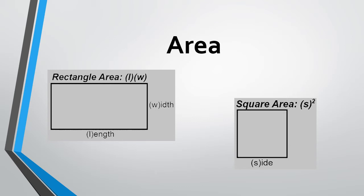By multiplying length times width, you can figure out how many squares fit in the rectangle. Now, if we take the idea of area equals length times width and apply it to a square: the length and width of a square are the same, so we call that side S. Side times side equals side squared — it's just like length times width, simplified to S squared.